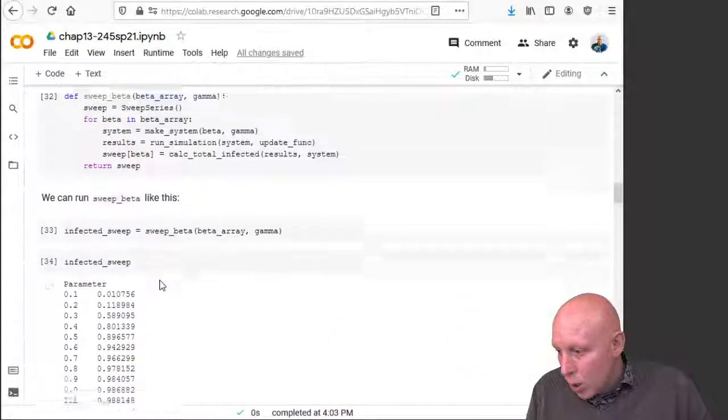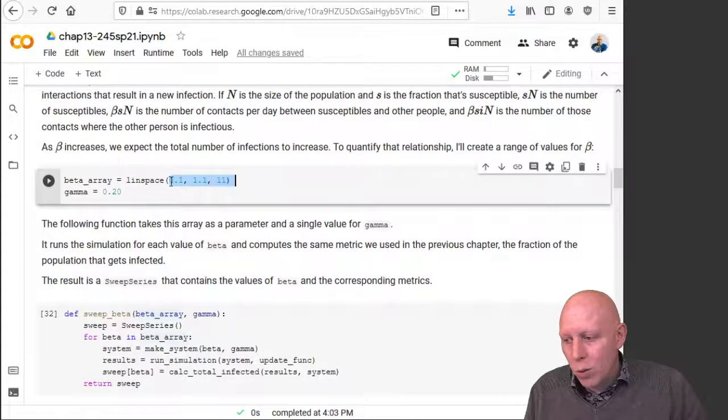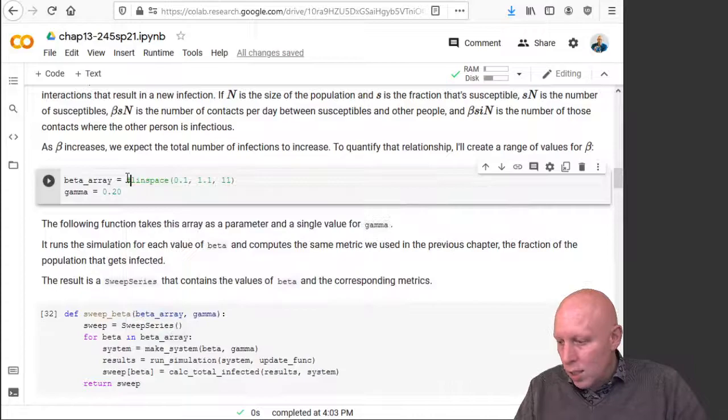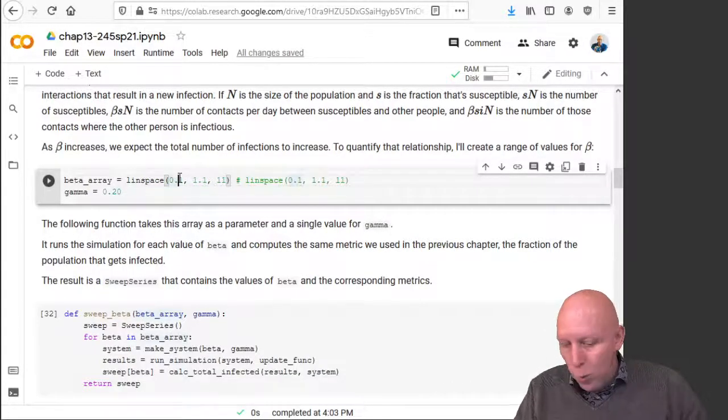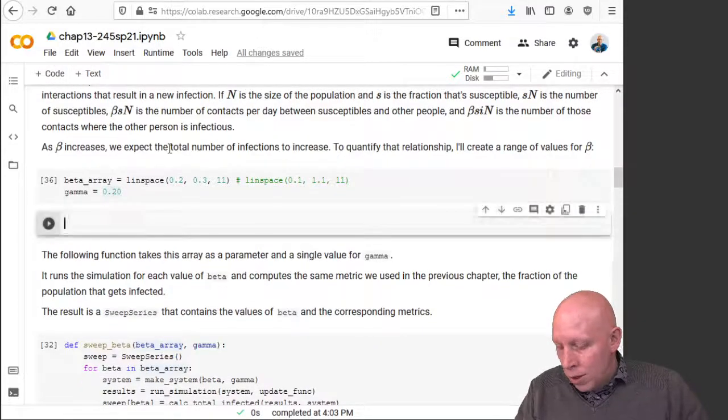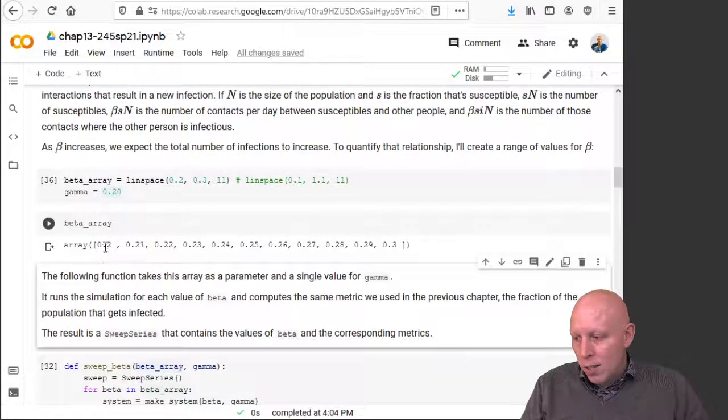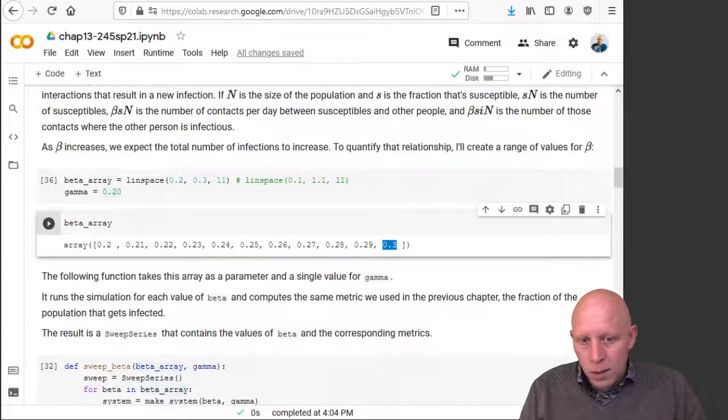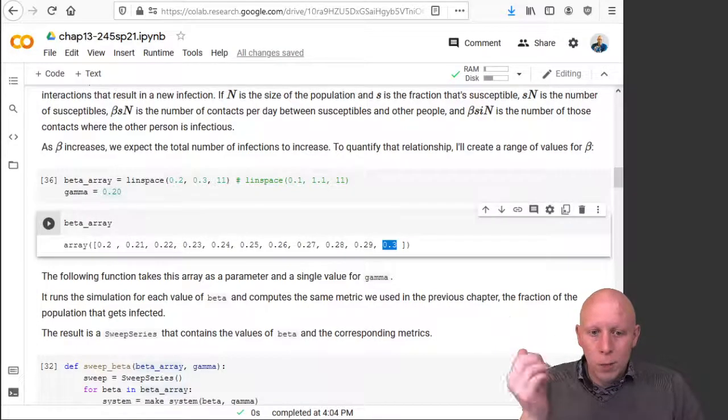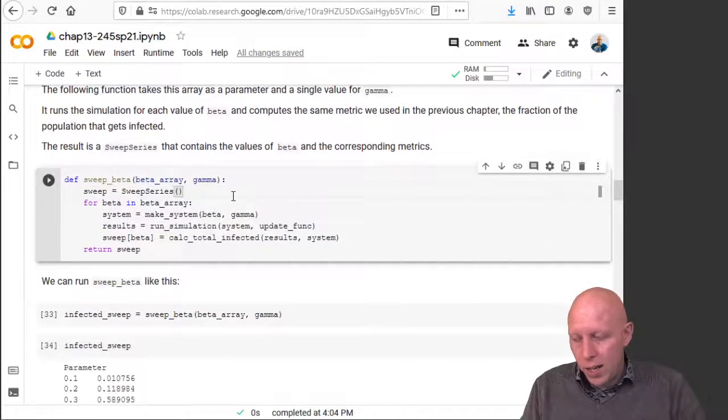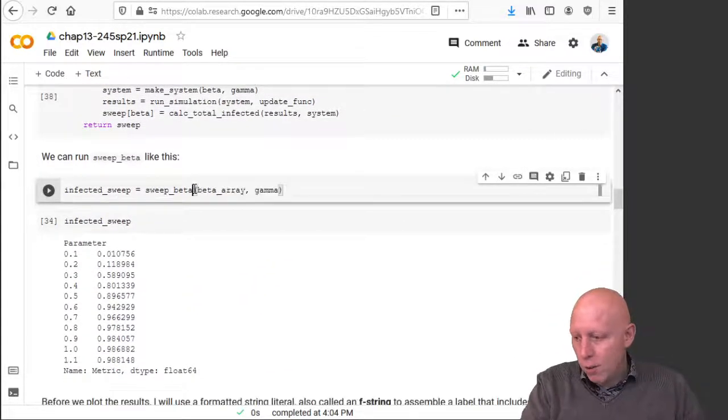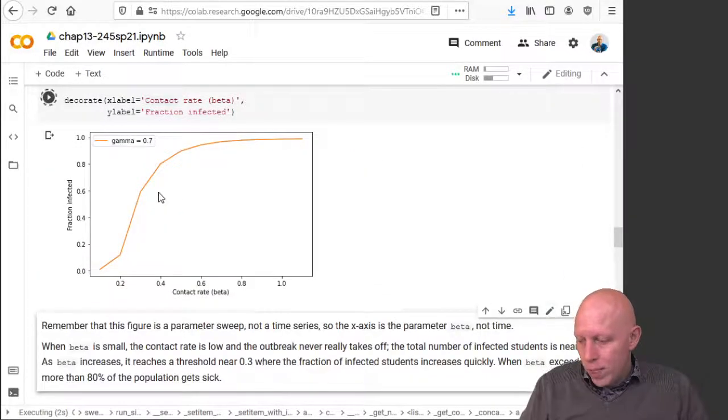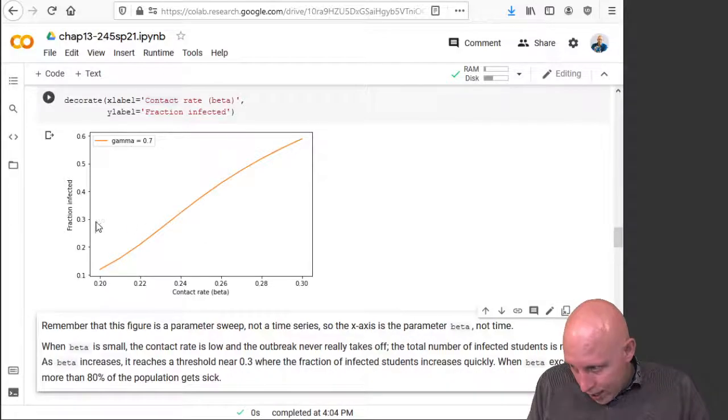So let's go up here and change our beta array. Instead of going between 0.1 and 1.1, let's change this so that we go between 0.2 and 0.3. When we do this, our beta array starts off at 0.2, goes up to 0.3, and now it's broken down by 0.01 instead of 0.1. So when we run this and we sweep our beta and look at what the graph looks like, we can see now we're only going between 0.2 and 0.3. And that's telling us that maybe 0.23 is a good estimate for beta.